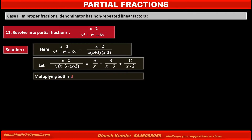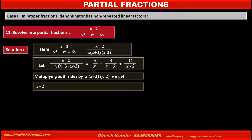Multiplying both sides by x(x plus 3)(x minus 2), the left hand side denominator cancels and becomes x minus 2. On the right hand side, the first term becomes A into (x plus 3)(x minus 2), the second term becomes B into x(x minus 2), and the third term becomes C into x(x plus 3). Consider this as equation 1.